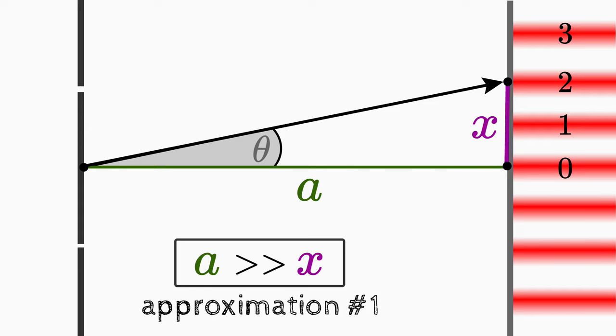So in order for this approximation to be applicable, we have to place the screen as far away as possible from the double slit in the experiment. This in turn means that the angle theta becomes very small.